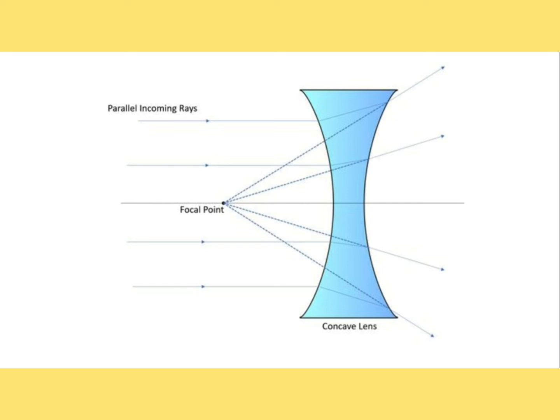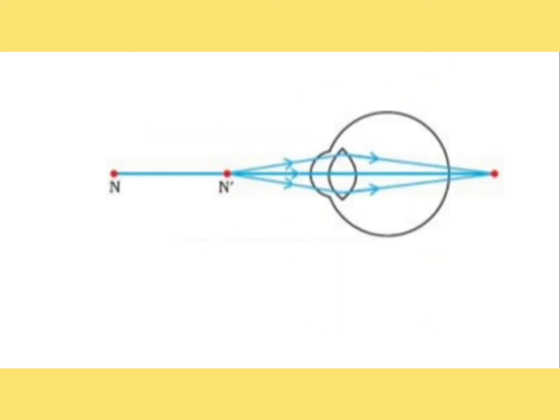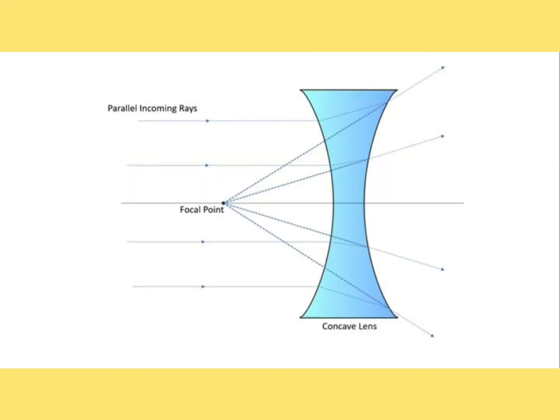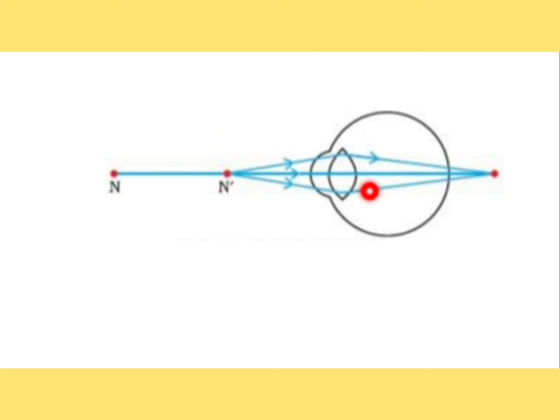Continue putting the minus lenses and at a specific point the patient will say they are not able to clear the image properly. Instruct the patient to blink once and see again, and if the patient is still not able to clear the near target, that point is called the first sustained blur. When minus lenses are added, the focus is shifted backward, making the patient effectively hypermetropic — light rays are now focusing behind the retina.